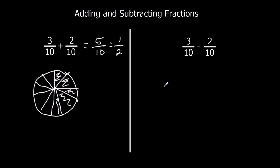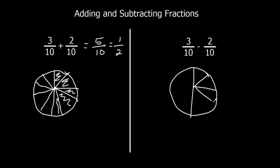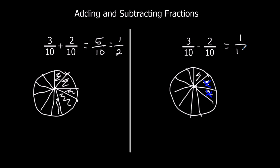Taking away, it's the same kind of process. So I've got that pizza again cut into 10 slices, and I've got 3 tenths, and I'm going to take away 2 — so I'm going to eat 2 slices of pizza. Take away 2, what have I got left? I've got 1 slice, 1 tenth left. So that's 3 take away 2 is 1, and it's still in tenths.